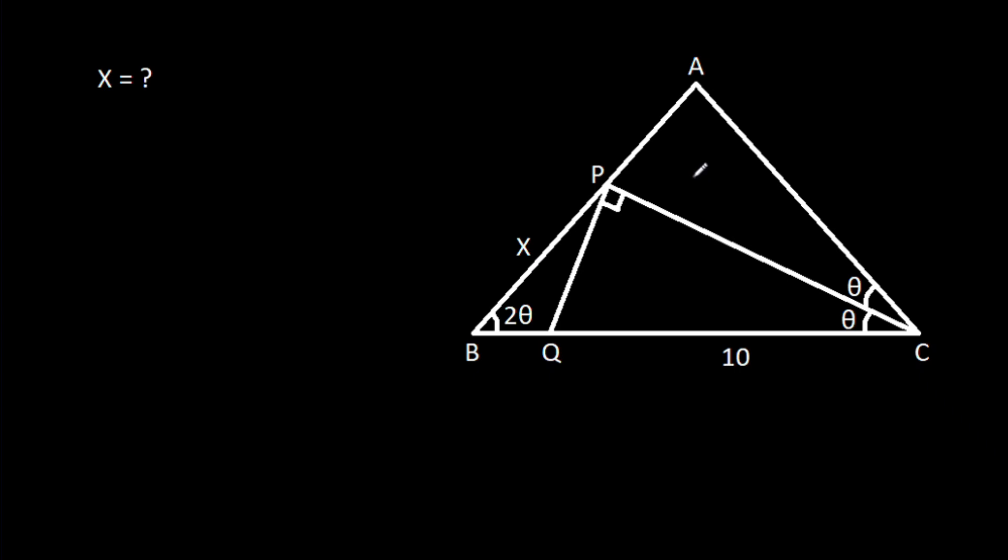In this video, we have been given that angle ABC is 2 theta, angle ACP is theta, angle BCP is theta, angle CPQ is 90 degrees and CQ is 10, BP is X, then we have to find X.